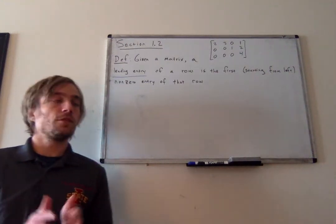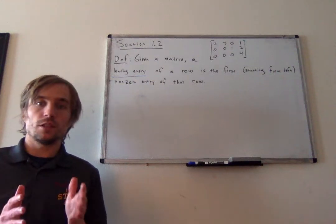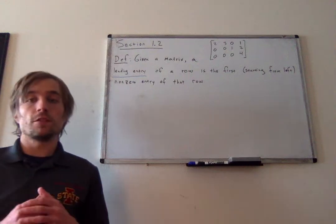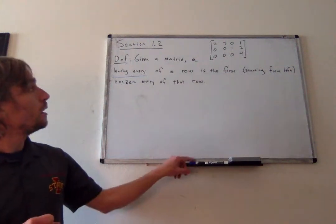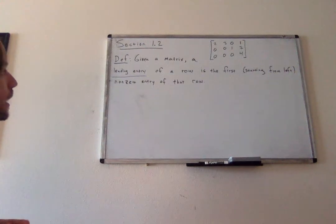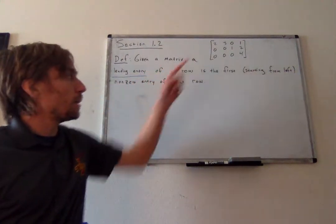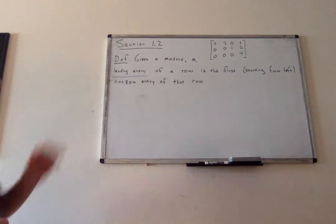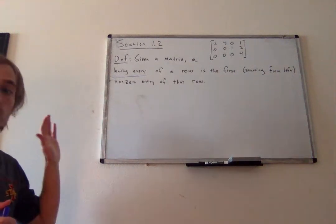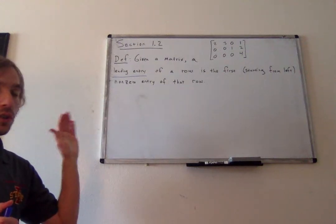This video we're going to introduce a few definitions and some very important terminology which we will be using for the rest of the semester. First definition: given a matrix, a leading entry in a row is the first non-zero entry of that row. When we talk about first non-zero entry, we always start from the left.